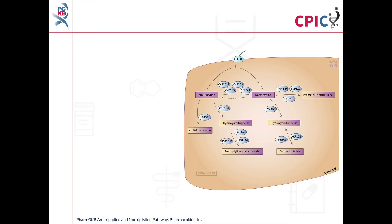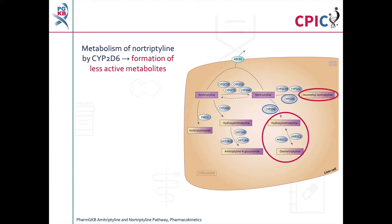This is the PharmGKB amitriptyline and nortriptyline pharmacokinetics pathway. A link to this pathway is provided in the description below this video. Nortriptyline is the active metabolite of amitriptyline and is itself available as a drug. It is metabolised by CYP2D6 to form less active metabolites.